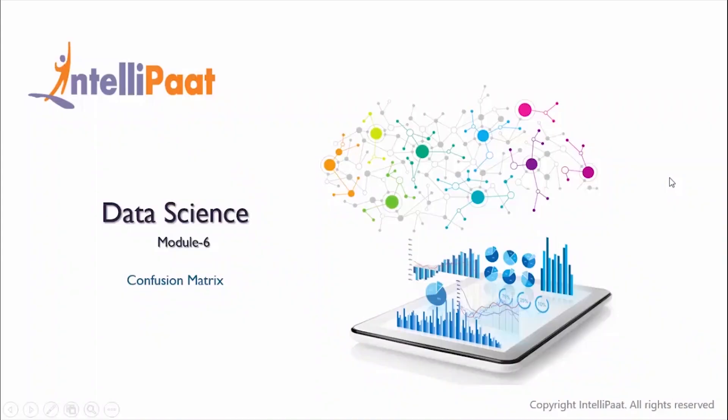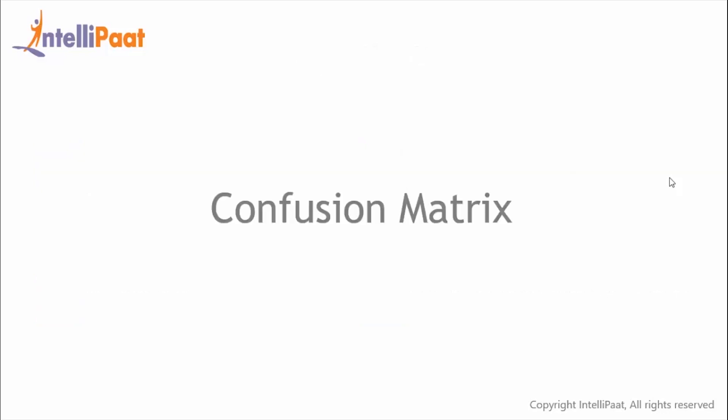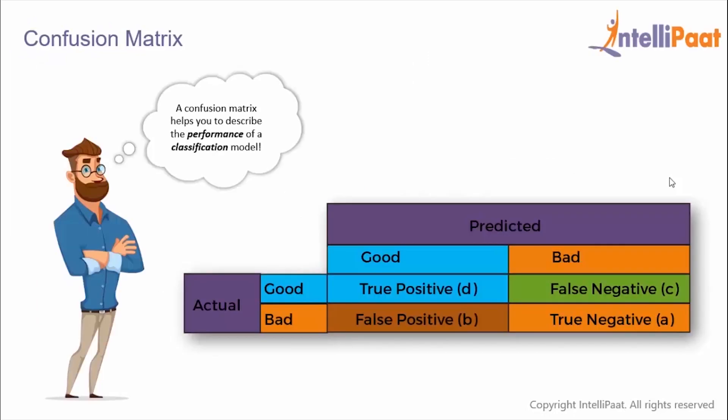Welcome back to the sixth module of this data science course. In this session we'll start by understanding what the confusion matrix is, then look at some performance metrics which can be obtained from the confusion matrix, following which we'll understand the concept of thresholding, and finally we'll implement the confusion matrix in R.